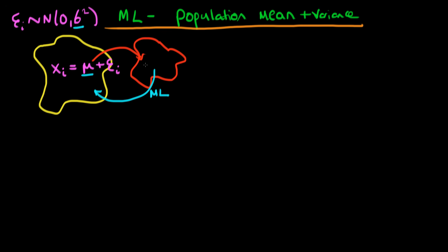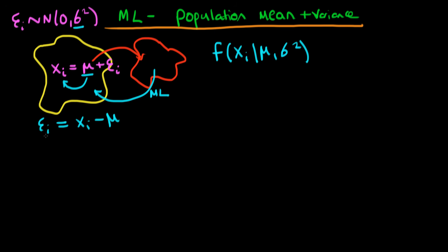First we need to define the probability distribution for an individual xᵢ — we'll write that as a function of xᵢ given that we knew μ and σ². To see this, if we take μ to the other side we're left with εᵢ equals xᵢ minus μ. We already know εᵢ is normally distributed with a mean of zero and a variance of σ².